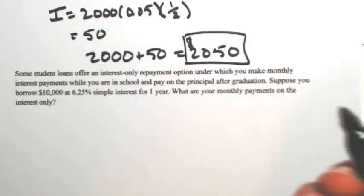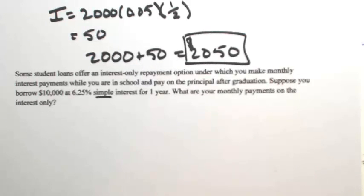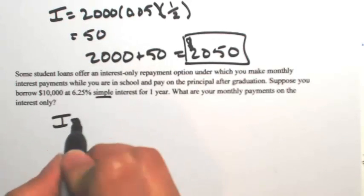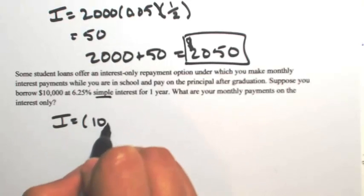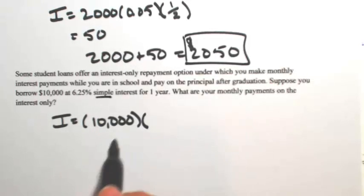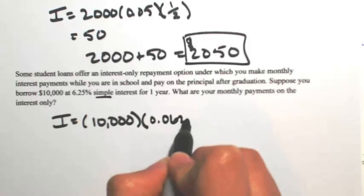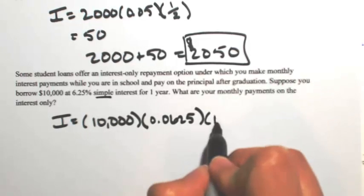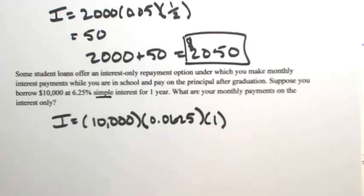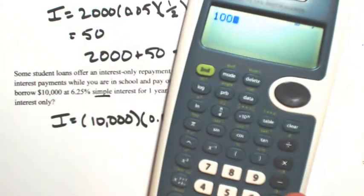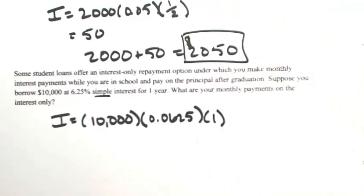Because this says simple interest, we're going to use our simple interest formula. So I is equal to the principal, which was the $10,000, times the rate as a decimal, so 6.25% is 0.0625, and then the time is one year. Multiplying that together, we get interest of $625.